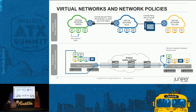That policy is different from security groups, where you instantiate a security group on a particular VM. In the case of a policy, you apply it to a full virtual network, so it's automatically inherited by any VM launched in that virtual network. By default, everybody in the green network can talk to each other, but when they want to go to blue, we have a policy saying only HTTP traffic can go through, and that policy triggers for everything.